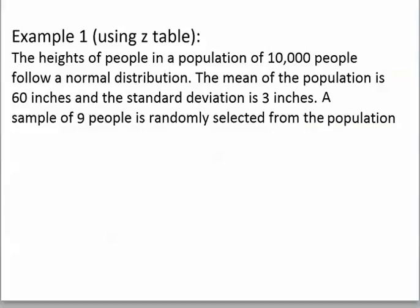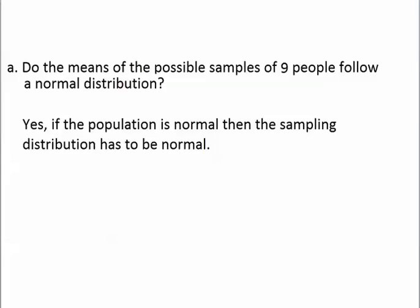So the answer to this question is yes, the sampling distribution is normal because the population is normal. We know that the means of the possible samples of 9 people follow a normal distribution.